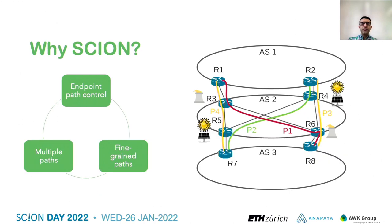In contrast, Scion provides the foundations of CO2-aware interdomain communications by enabling endpoints to select their traffic's forwarding path and providing them with multiple fine-grained paths in the granularity of inter-AS interfaces. This unique feature can be used to provide endpoints with information about the carbon intensity of each interdomain path, and thereby enable them to monitor the carbon footprint of their interdomain communications and optimize it through selecting the greenest path.